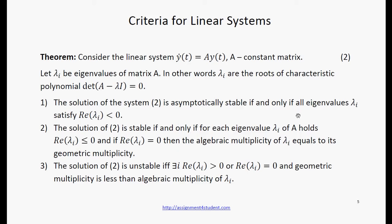Second, the solution of 2 is stable if and only if each eigenvalue is less or equal to 0. In case it is equal to 0, then the algebraic multiplicity of lambda equals to its geometric multiplicity.